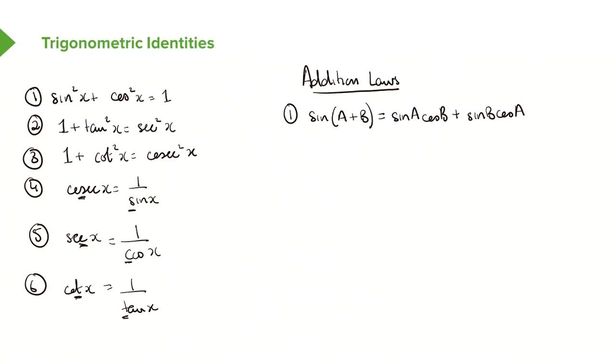You can also subtract this, but the signs would change. So if you were looking at subtracting this, you could just put a minus here. So sin(A-B) would give you sinA cosB minus sinB cosA.